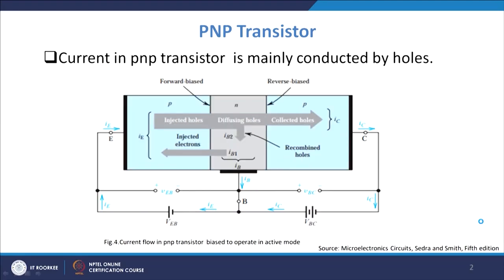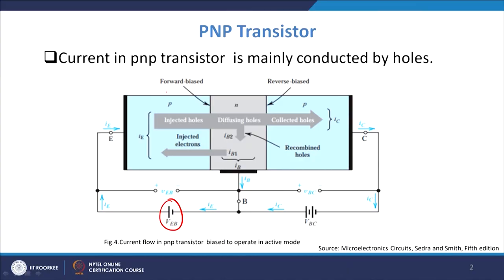The same concept applies to a PNP transistor. The biasing of the battery will change — it is forward biased P to N — and VBC again reverse biases the base-collector. The understanding is exactly the same: base-emitter is forward biased so depletion is small; base-collector is reverse biased so it remains large.